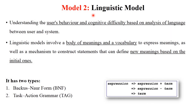The next and second model is the Linguistic Model. The Linguistic Model understands the user's behavior and cognitive difficulty based on analysis of language between the user and the system. It involves a body of meaning and vocabulary to express meaning, as well as a mechanism to construct statements that can define new meanings based on initial ones. It analyzes the meaning of what the user types through the keyboard and what the system understands. It has two types: Backus-Naur Form (BNF) and Task Action Grammar (TAG).